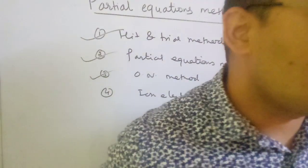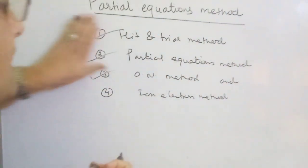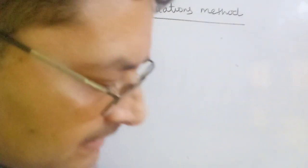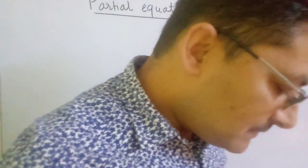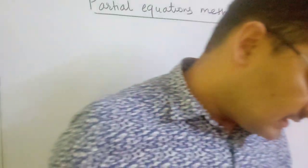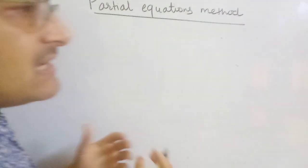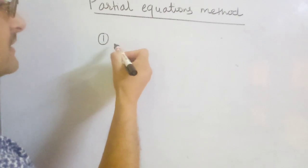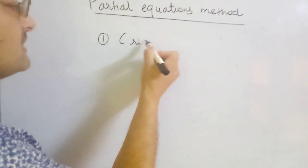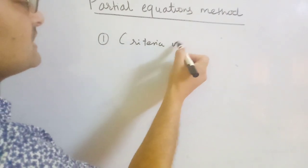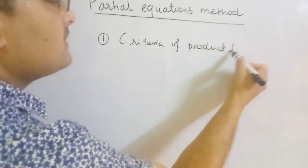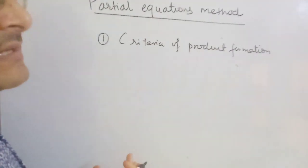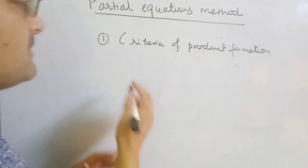So what is the partial equation method and how to balance a chemical equation using it? In partial equations method, you should have the idea of three different things. First, you should have the idea of criteria of product formation — you should know which compound gives which kind of partial product in the reaction.